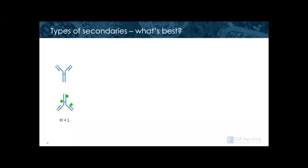When performing an immunofluorescence experiment, there are several types of secondaries to choose from. Here I'm showing whole molecule secondaries — antibodies collected from sera of one species inoculated with protein from the species you're trying to detect. These antibodies are purified and conjugated to your fluorophore of interest. Whole molecule secondaries contain an Fc domain which binds to cells with Fc receptors and may cause some background. You can work around this by using Fab2 or Fab fragments, which are digested by pepsin and papain respectively to remove the Fc domain. Fragments are also better able to penetrate tissue, but are more expensive.